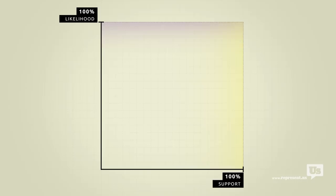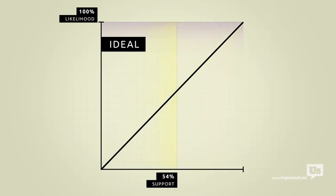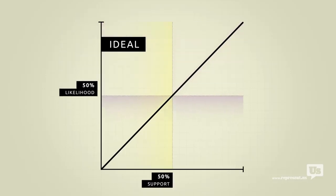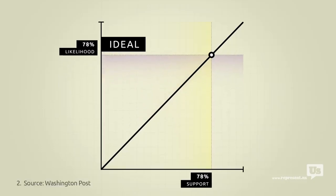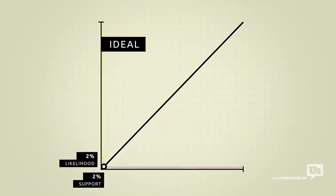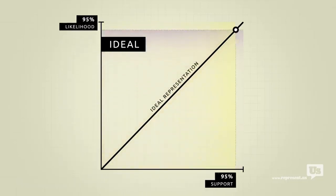On this graph, an ideal republic would look like this. If 50% of the public supports an idea, there's a 50% chance of it becoming law. If 80% of us support something, there's an 80% chance. You get the idea. Now, most Americans would probably agree that, with a few exceptions, we should be as close to this ideal as possible.